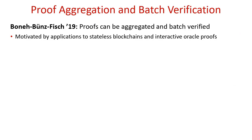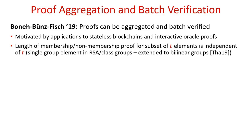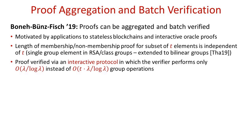Motivated by recent applications of accumulators to stateless blockchains and interactive Oracle proofs, Boneh et al. observed that a useful feature of accumulators is the ability to aggregate proofs for several elements and then to batch verify them. Hash-based accumulators seem somewhat less suitable for offering such features with practical efficiency guarantees, and therefore Boneh et al. relied on the structure provided by RSA groups, and more generally by unknown order groups such as the class group of an imaginary quadratic number field. Specifically, they showed that membership proofs and non-membership proofs for any subset of T elements can be aggregated into a single proof whose length is independent of T, and their aggregated proofs are verified via an interactive protocol where the number of group operations performed by the verifier is again independent of T.